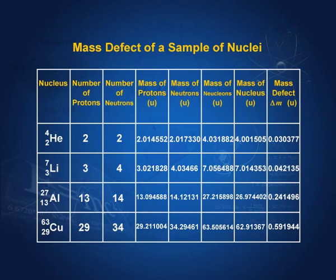Here we have given the mass defect of a few nuclei. You can see the mass number, the number of protons, the number of neutrons, and the combined mass of all the nucleons. The actual measured mass is also shown, and the mass defect is the difference between the combined mass of all the nucleons and the actual measured mass of the nucleus.